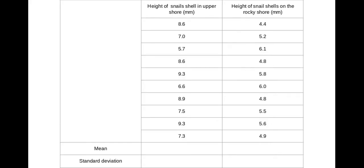So here's a set of data where I've got snail shells on an upper shore and snail shells on the rocky shore. So the first thing I need to do with my data sets is find out the mean and the standard deviation. Again using your calculator for this is the easiest way to do so. So here is my mean and my standard deviation.